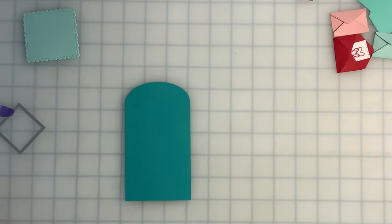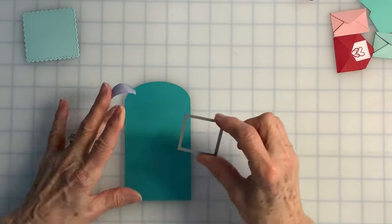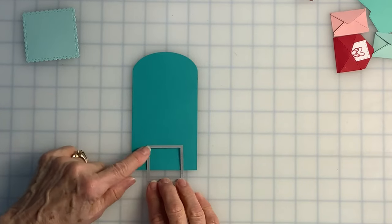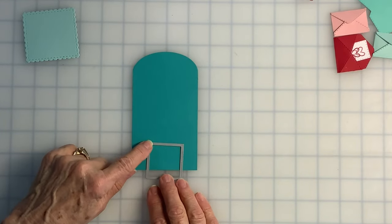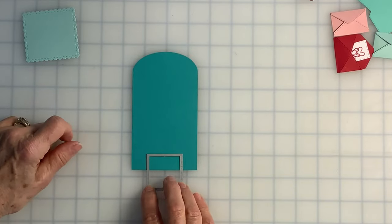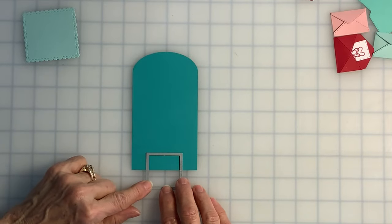All right, next we need the legs of our mailbox, and that will be done with this die. This square die is 1 and 3/8 inches, and we are going to position it partway off of the cardstock. You may choose whatever length of leg on your mailbox you would like, but again, I'm recreating the image that's in the catalog, so I'm going to push it up just a little bit.